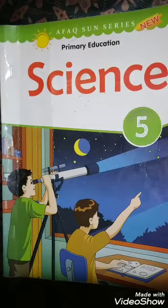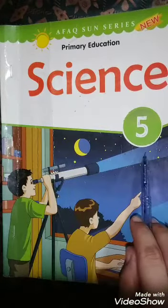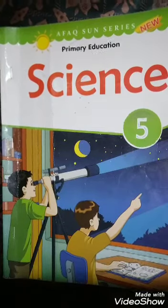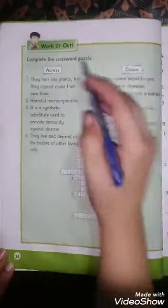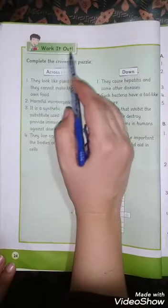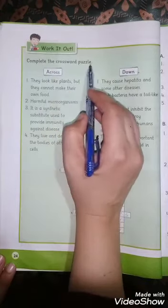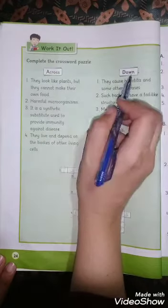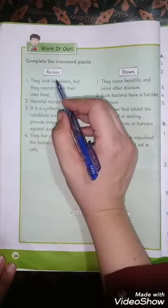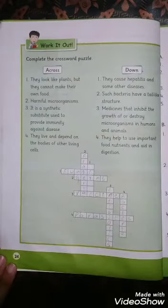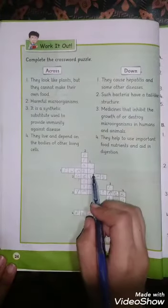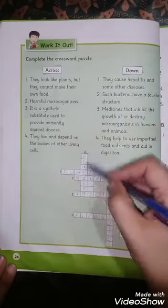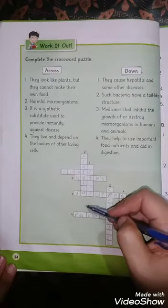Bismillahirrahmanirrahim, Assalamu alaikum. Science Grade 5, Unit 3, Our Body Microbes. Open page number 24, Work It Out. Complete the crossword puzzle. Across means from one side to the other, down means from top to bottom.